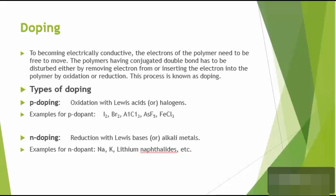Conducting polymers are prepared by a process called doping. Doping is the creation of positive or negative centers in the polymer backbone by oxidation or reduction. There are two types of doping: P-doping and N-doping. P-doping is oxidative doping. By this process, positive centers are created. The substances which help oxidation are called P-dopants. Examples are Lewis acids and halogens.